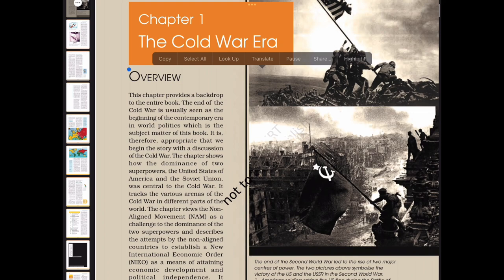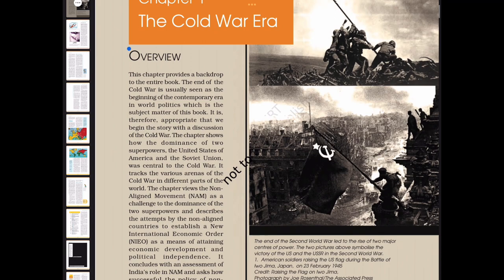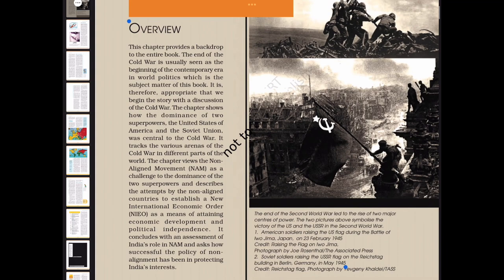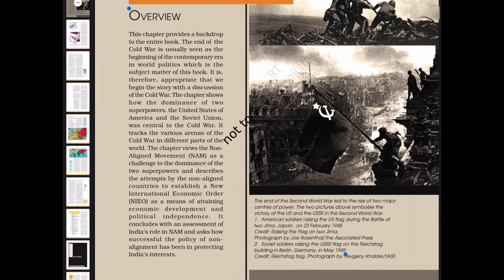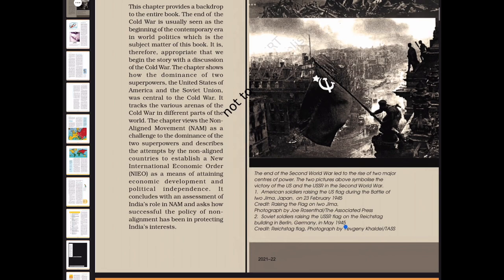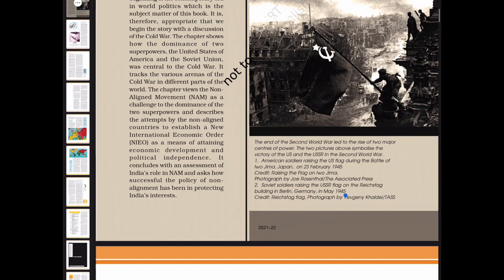This chapter provides a backdrop to the entire book. The end of the Cold War is usually seen as the beginning of the contemporary era in world politics, which is the subject matter of this book. It is therefore appropriate that we begin the story with a discussion of the Cold War. The chapter shows how the dominance of two superpowers, the United States of America and the Soviet Union, was central to the Cold War, and tracks the various arenas of the Cold War in different parts of the world.